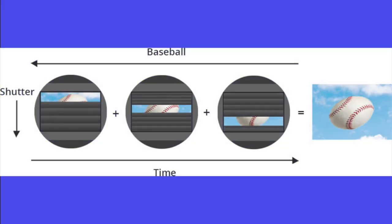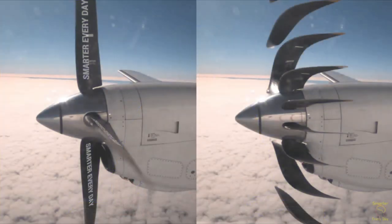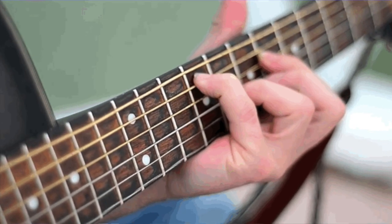Due to the time it takes to read the sensor, the subject can move, and this is why we still call it rolling shutter effect to this day. Here are some examples which you might have experienced. There are two basic approaches to solving this.